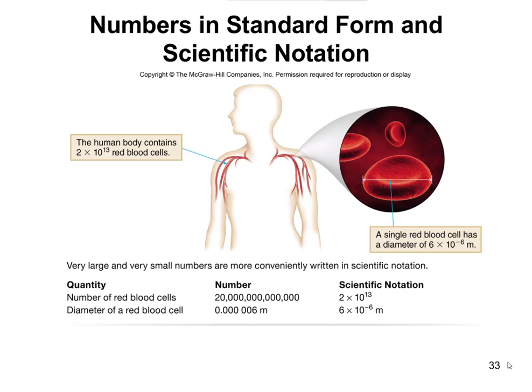Another way to scale numbers is to use metric prefixes. I'll tell you that another way to write 6 times 10 to the negative 6 would be to say you have 6 micrometers. That's because micro is the prefix for 1 million — there are 1 million micrometers in a meter. So using those metric prefixes is another way to help scale these numbers and write them in an easier format than using a whole lot of zeros.